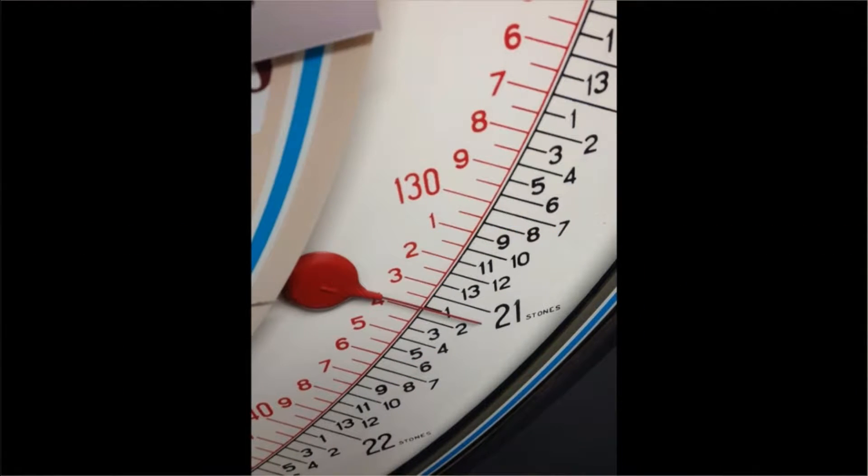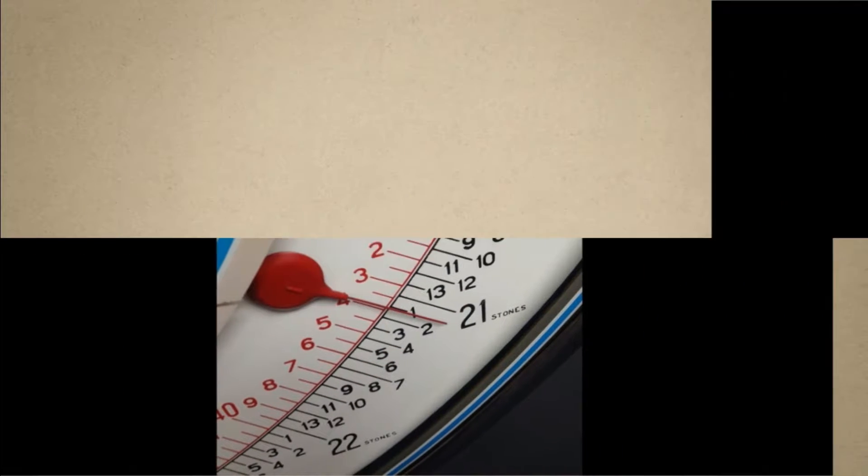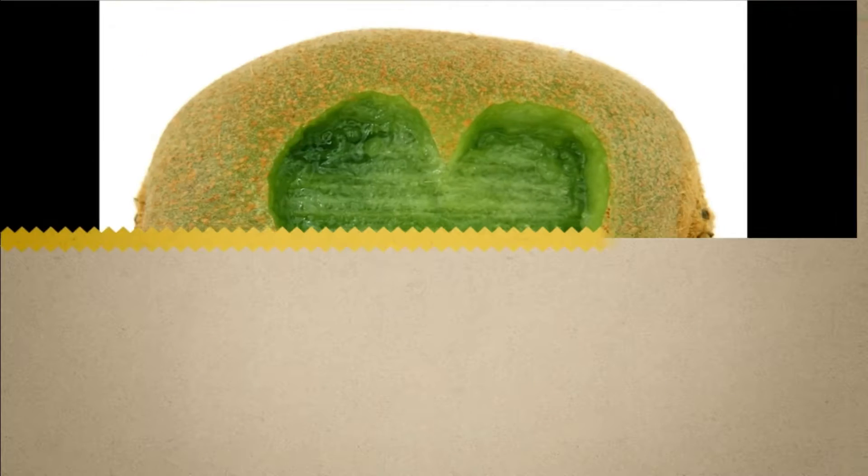With the keto diet, the body metabolizes fat instead of sugar into energy. Ketones are a byproduct of that process.